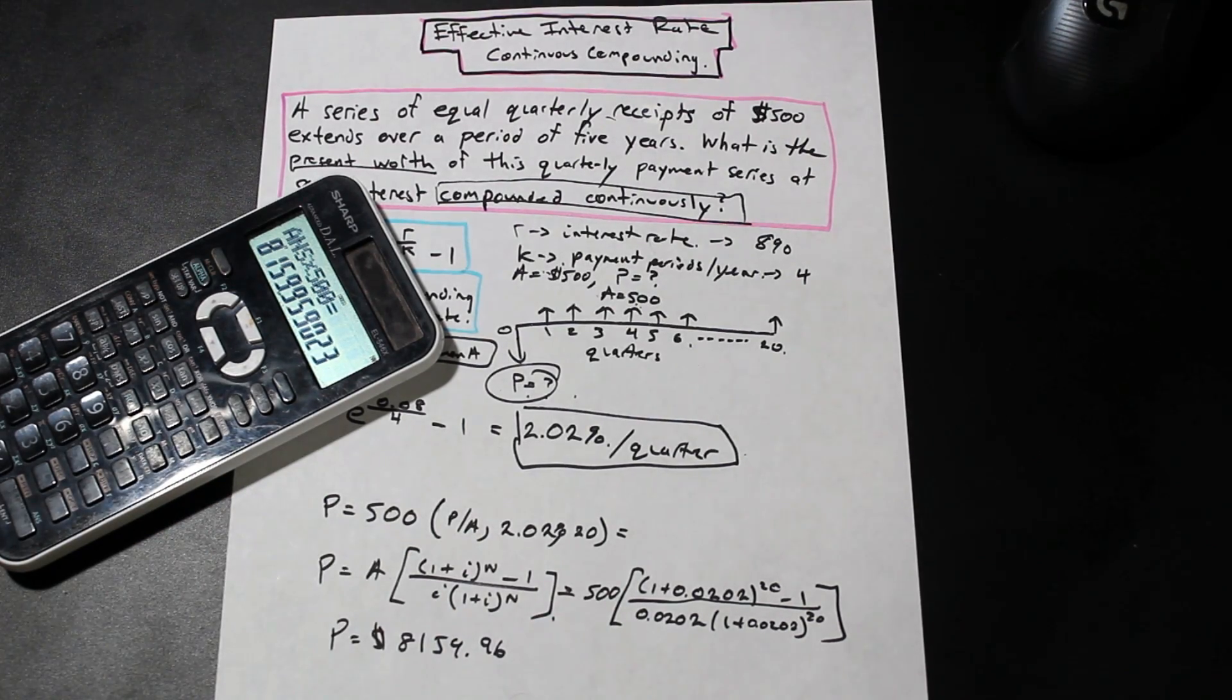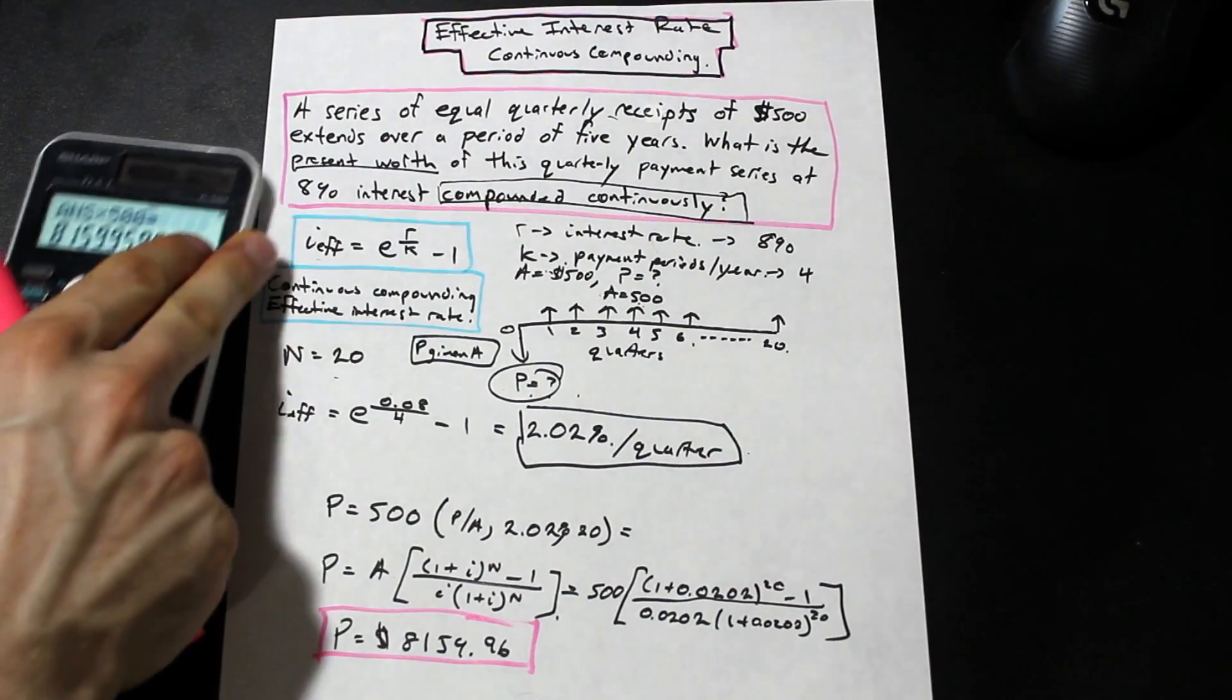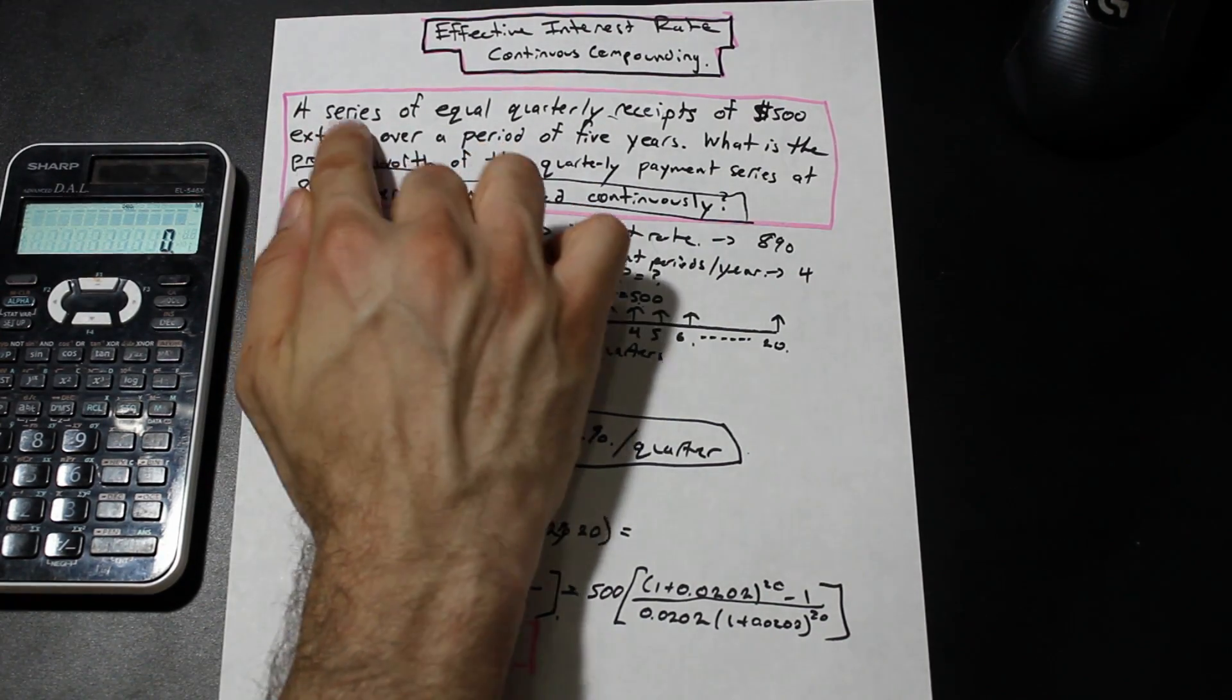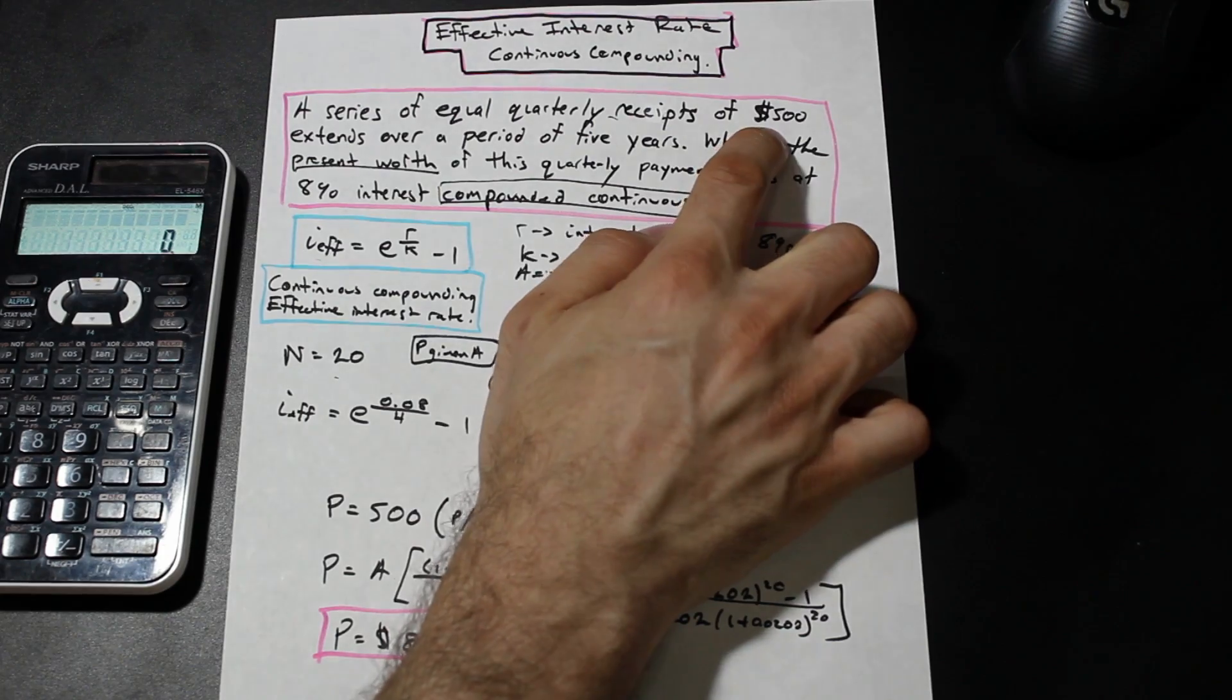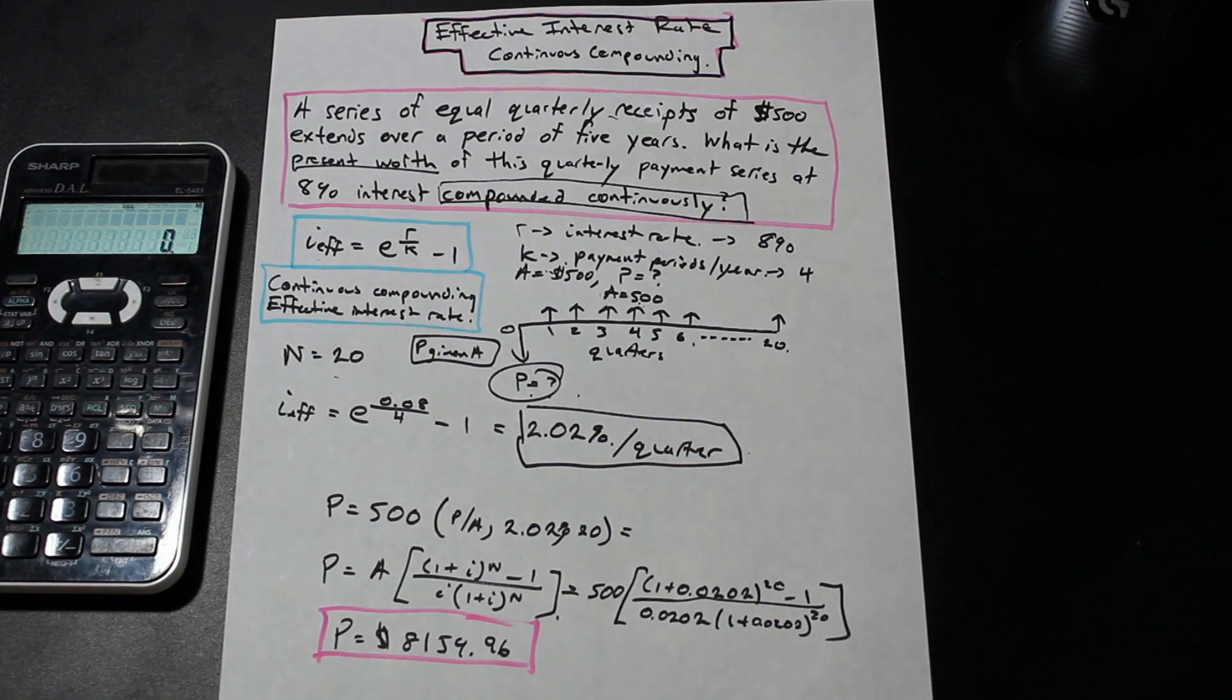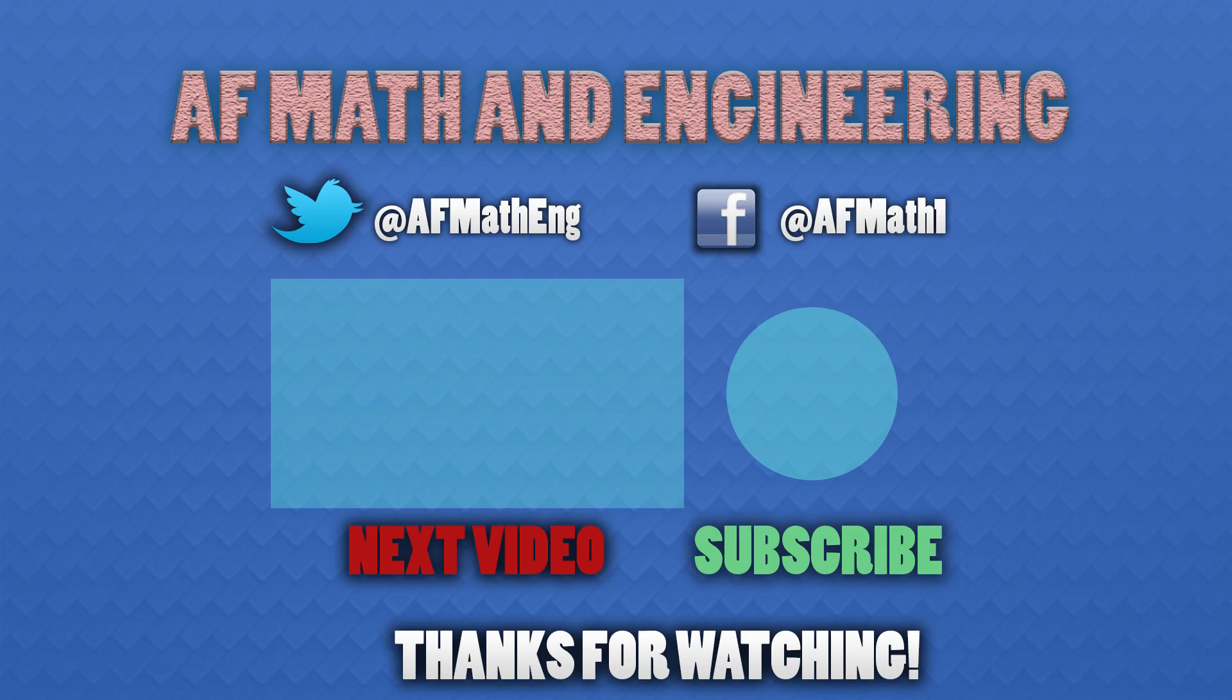And what does this mean? It's obviously important to understand what the value is that you got, because that helps you not make mistakes in the future. This present value here is the value of the series of equal receipts, quarterly receipts of $500 extended over a period of five years, and those receipts are compounded continuously in an infinitely small time frame. Yeah, that's pretty much it. Hope you learned something there. Like and subscribe if you enjoyed the video.